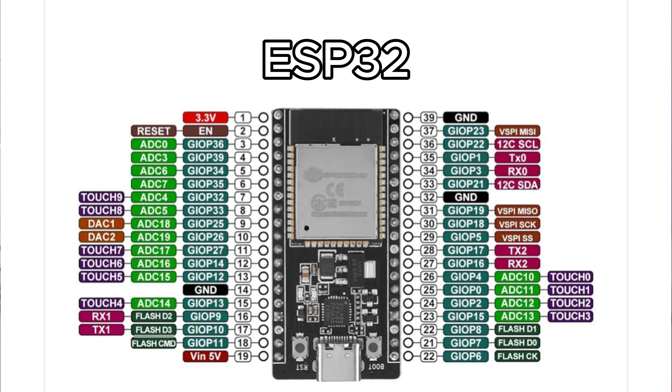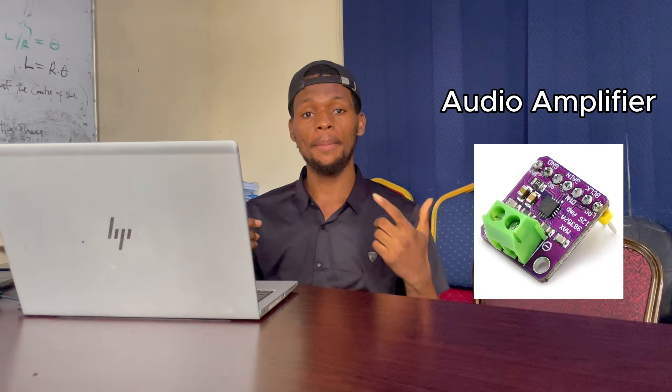Hi, Zaifa here. In this video, I will be showing you how to turn your ESP32 into a music player by connecting it to an audio amplifier and an 8-ohm speaker. For the audio amplifier, we'll be using MAX98357A. It is a digital to audio amplifier that takes signal from the ESP and drives to a speaker.